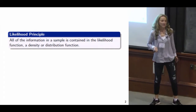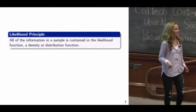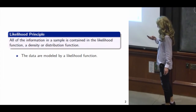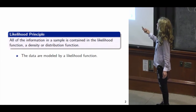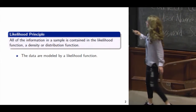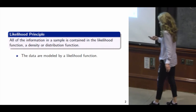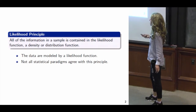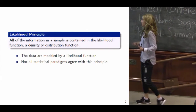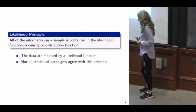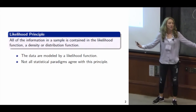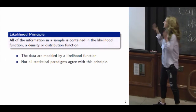Bayesian statisticians often rely on something called the likelihood principle. The likelihood principle says that all of the information in a sample is contained in the likelihood function. The data are modeled by the likelihood function, and not all statistical paradigms agree with this. Some frequentist approaches build the experimental design into inference, whereas Bayesian methods say that once your likelihood function is specified you can proceed with inference — all the information you need is in that likelihood.